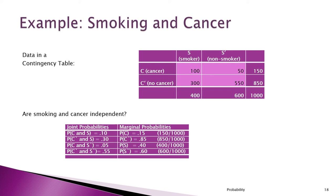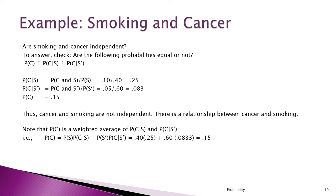The researcher wants to answer whether smoking and cancer are independent. We check if P(C) equals P(C|S). The probability of C given S — cancer given you're a smoker — is 0.10 over 0.40, which is 25%. So once we know you're a smoker, there's a 25% chance of dying of cancer.